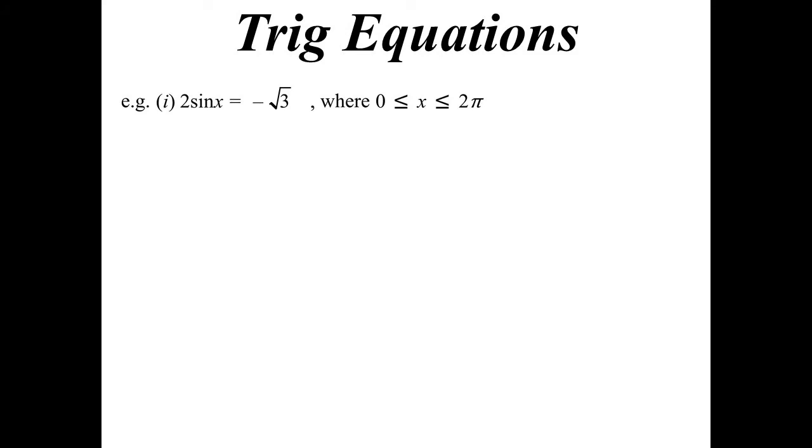Solving it's the same as we normally do, so rearranging this we get -√3/2, one of our exact values, so I know that's in the third or the fourth quadrant. The acute angle then would be π/3.